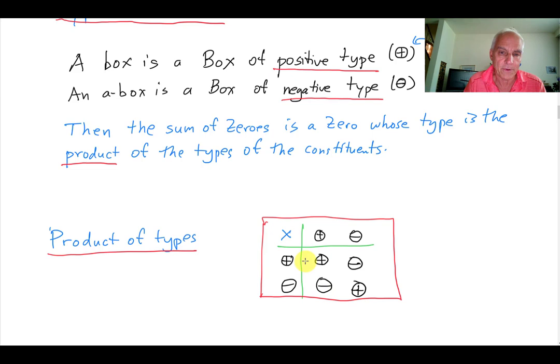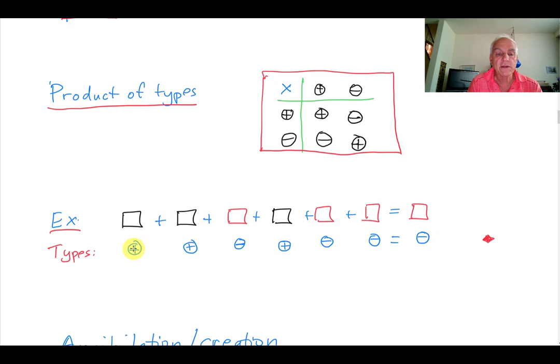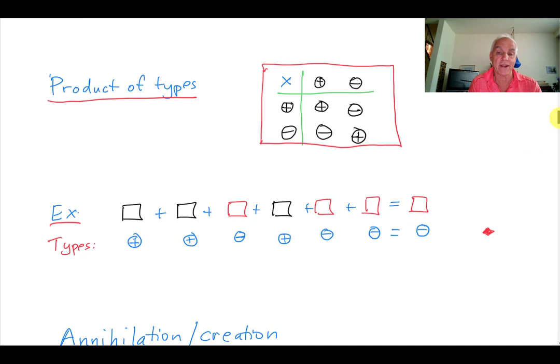We can express the summation of zeros by saying that the sum of zeros is a zero again, whose type is the product of the types of the constituents. We define the product of types: positive times positive is positive, negative times negative is positive, positive times negative is negative, and negative times positive is positive — the same as in ordinary life. So to determine the type of a sum of zeros, we just form the product of all the constituent types.